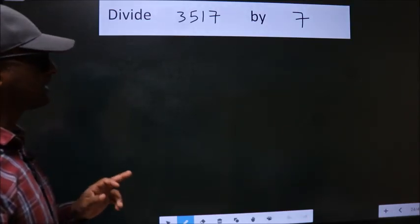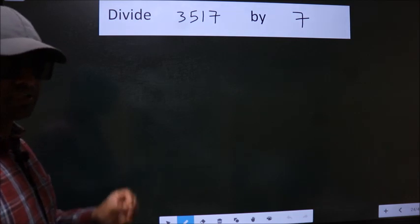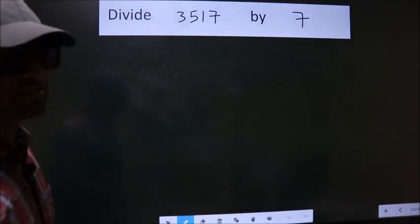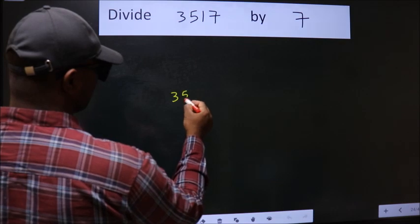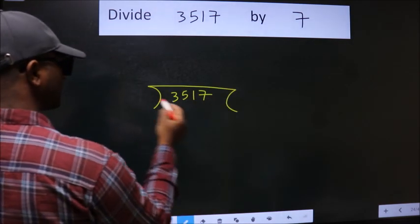Divide 3517 by 7. To do this division, we should frame it in this way. 3517 here, 7 here.